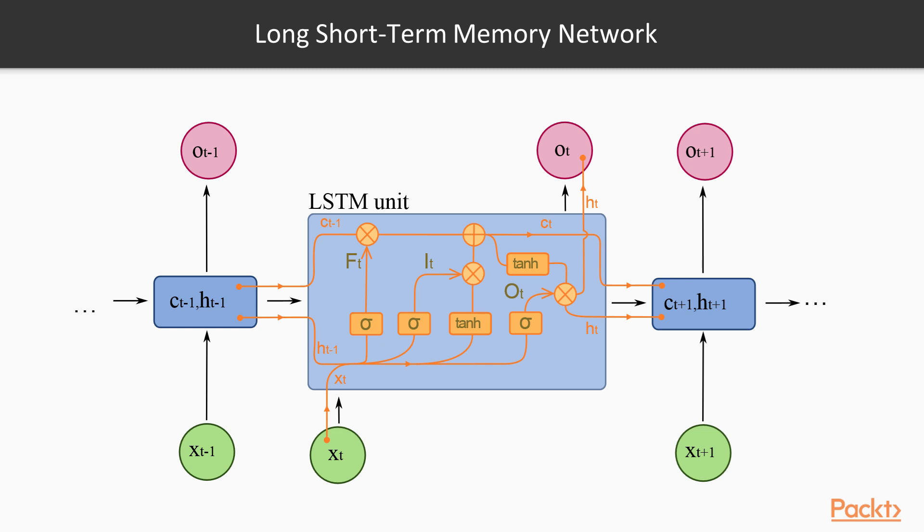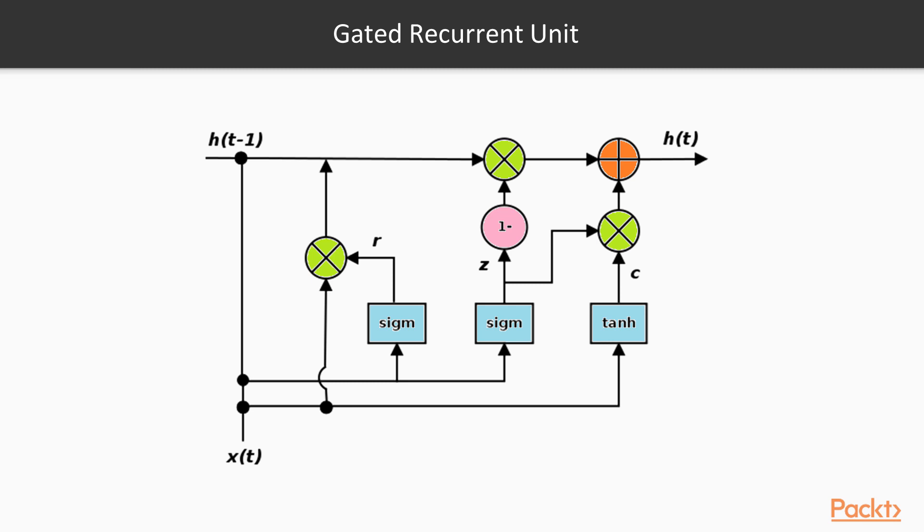The repeating module in an LSTM contains four interacting layers. The key to LSTMs is the cell state, the horizontal line running through the top of the diagram. The cell state is kind of like a conveyor belt. It runs straight down the entire chain with only some small interactions. It is easy for information to flow along it. LSTMs have the ability to remove or add information to the cell state, carefully regulated by structures called gates.